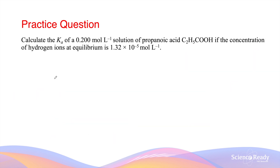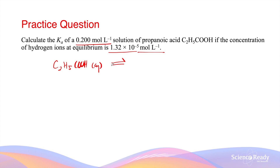Let's look at a different question, where we're given the concentration of hydrogen ions but have to calculate the Ka value for a weak acid. We have a 0.2 mol per liter solution of propionic acid — again, an example of a weak acid. The concentration of hydrogen ions at equilibrium is 1.32 times 10 to the minus 5 mol per liter. It's a good idea to write a chemical equation to represent the dissociation, where one hydrogen ion leaves the acid molecule, leaving behind a negatively charged conjugate base.